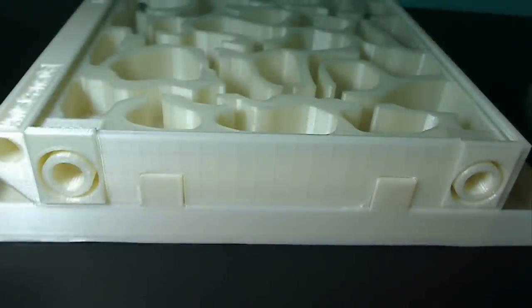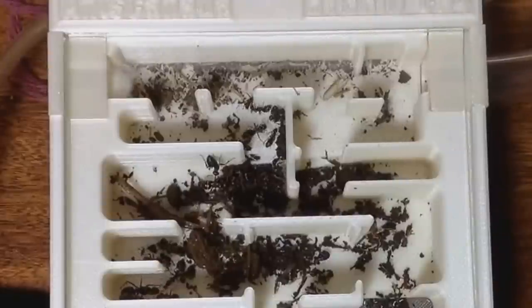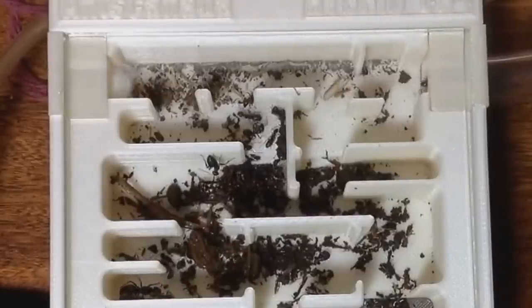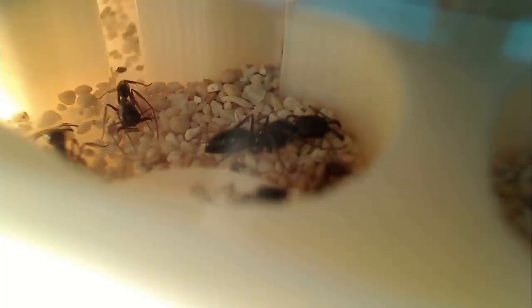So our first feature is perhaps the most important feature, the hydration system. The hydration system of the hybrid nest is designed to lessen the maintenance. We as ant keepers know that the less you have to worry about whether your formicarium is providing the proper amounts of moisture and humidity or not, the better.